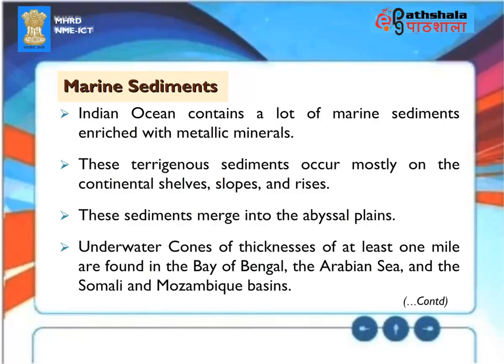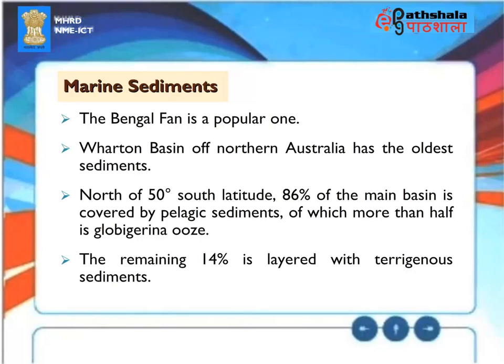Marine sediments. The Indian Ocean contains a lot of marine sediments enriched with metallic minerals. These terrigenous sediments occur mostly on the continental shelves, slopes and rises. These sediments merge into the abyssal plains. Underwater cones of thicknesses of at least one mile are found in the Bay of Bengal, the Arabian Sea and the Somali and Mozambique basins. The Bengal fan is a popular one. Wharton Basin of Northern Australia has the oldest sediments. North of 50 degrees south latitude, 86% of the main basin is covered by pelagic sediments of which more than half is Globigerina ooze. The remaining 14% is layered with terrigenous sediments.